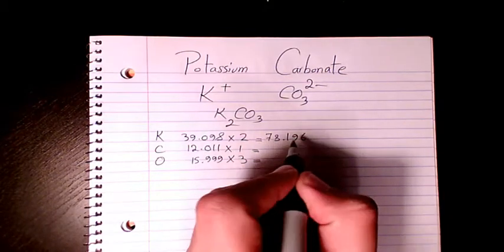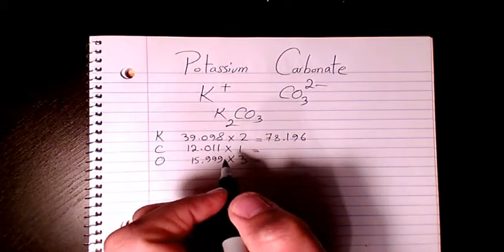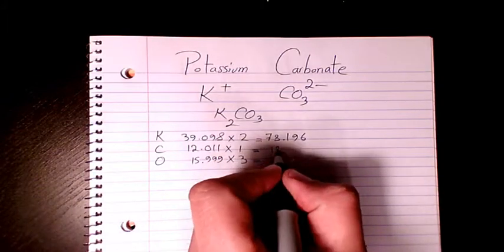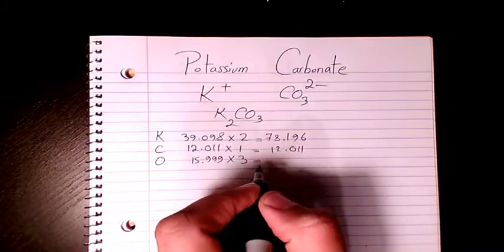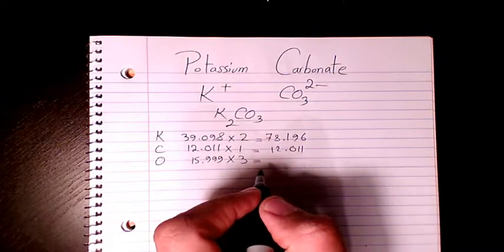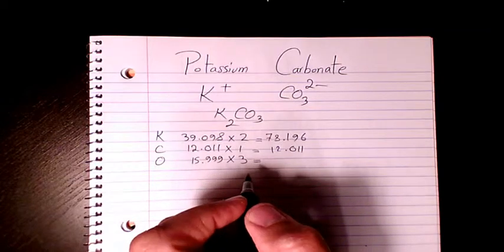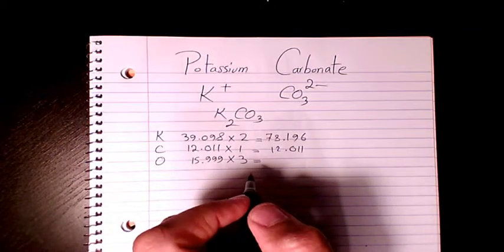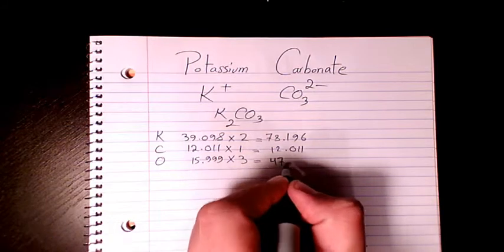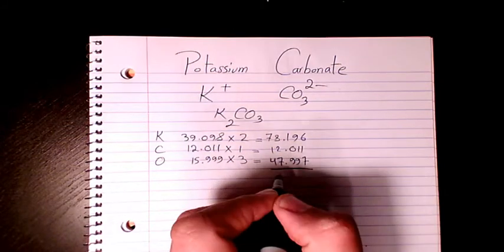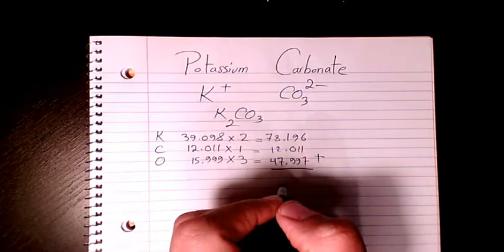Then 12.011 times one, it's gonna be the same thing. Then 15.999 times three, that makes it 47.997. Then you add them all.